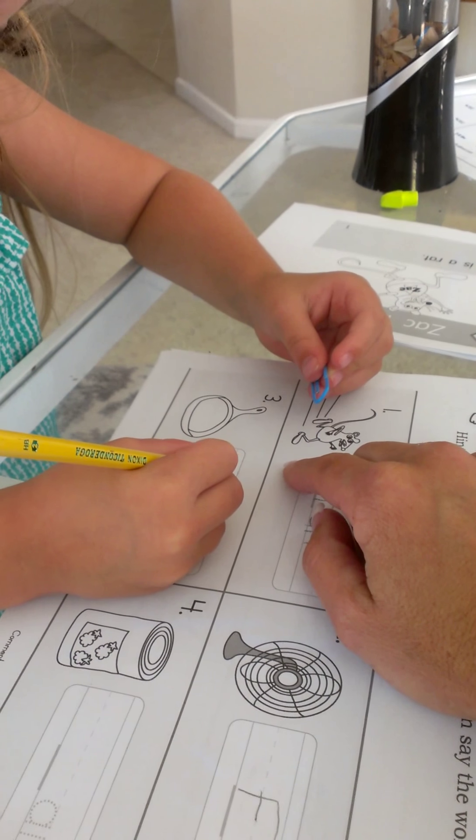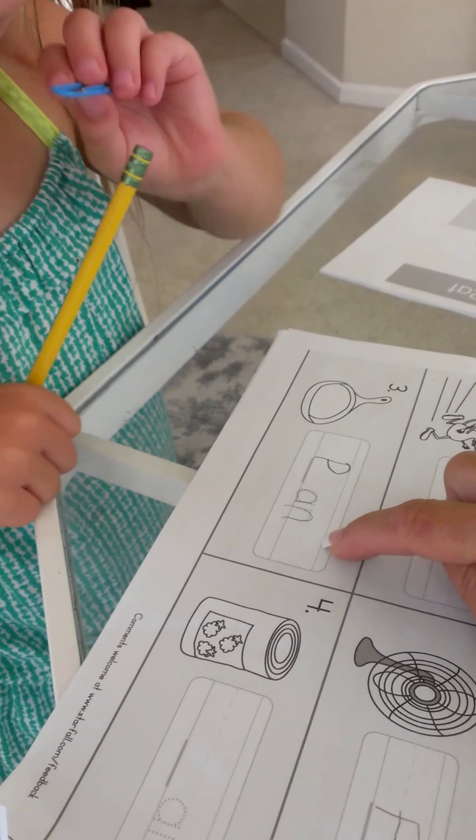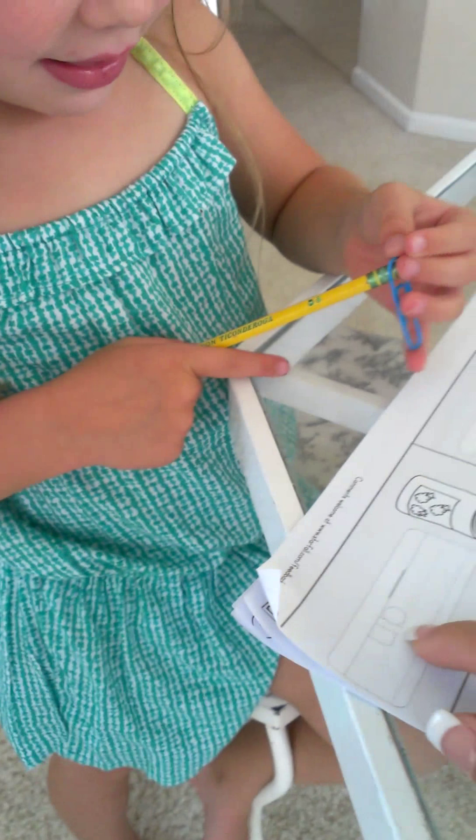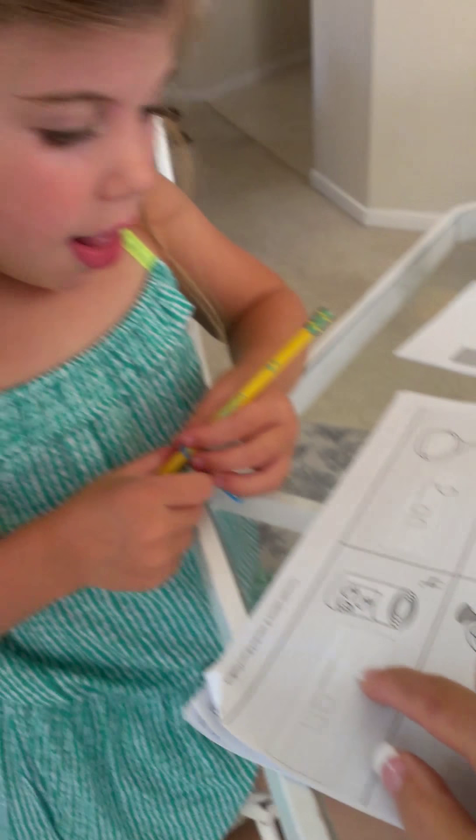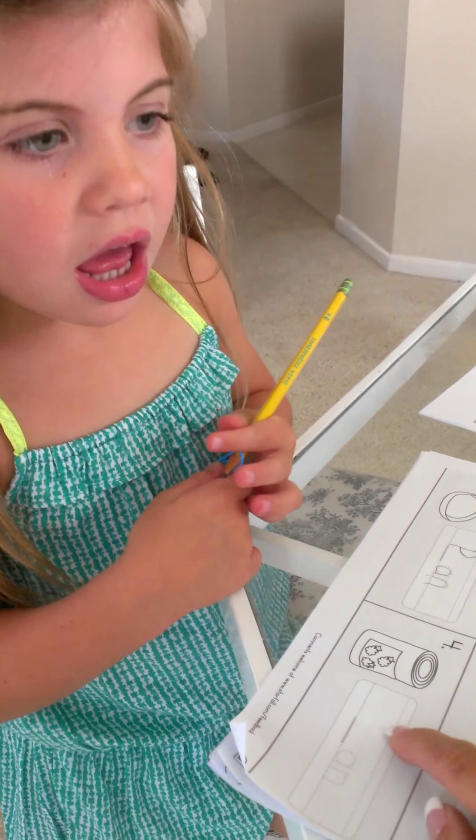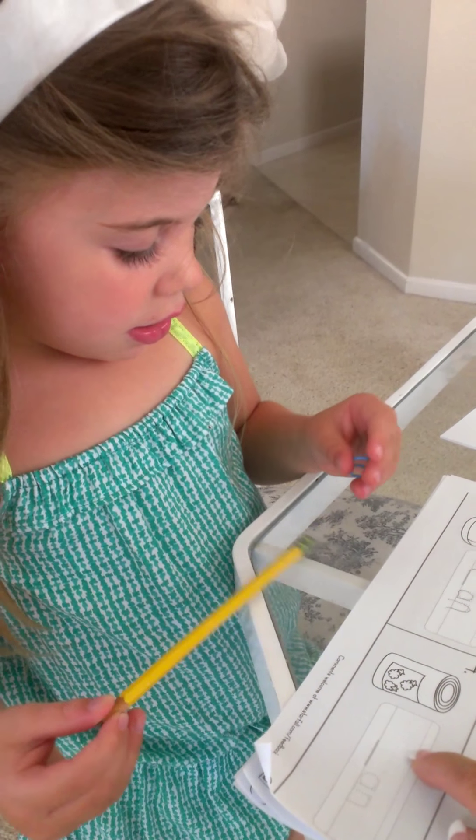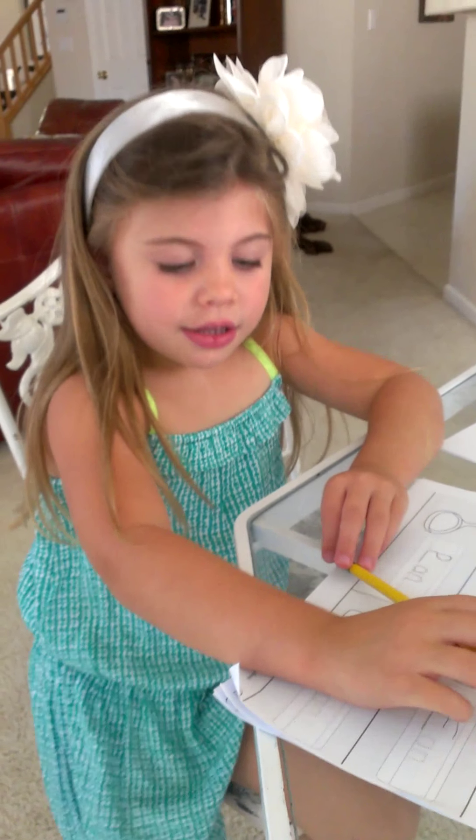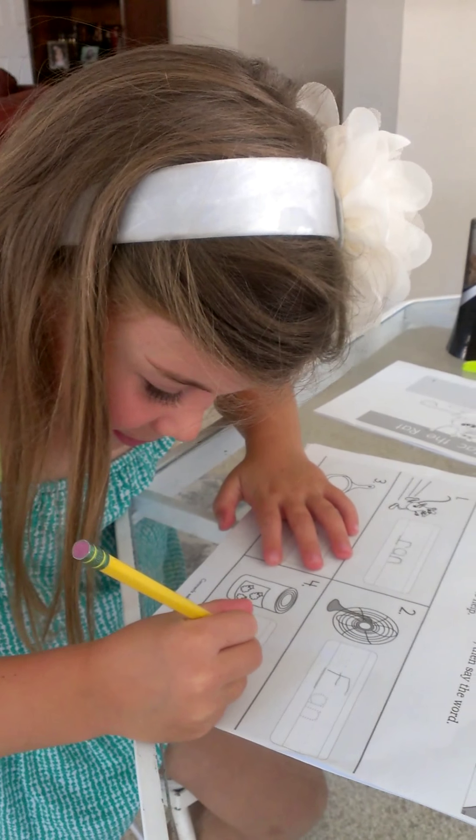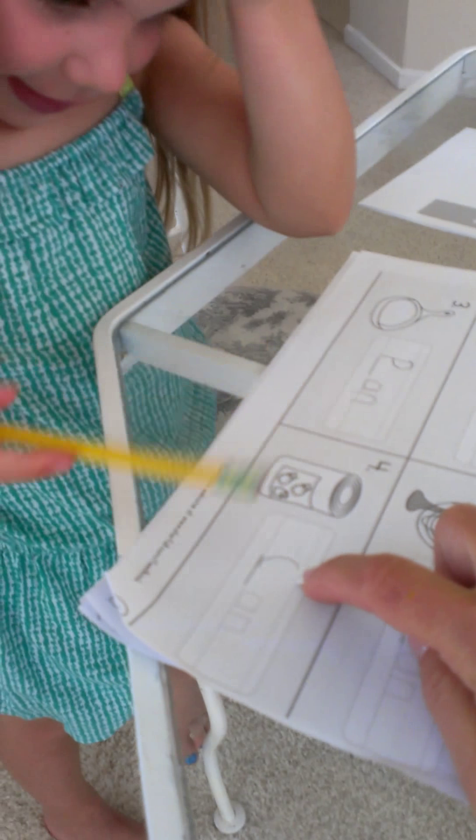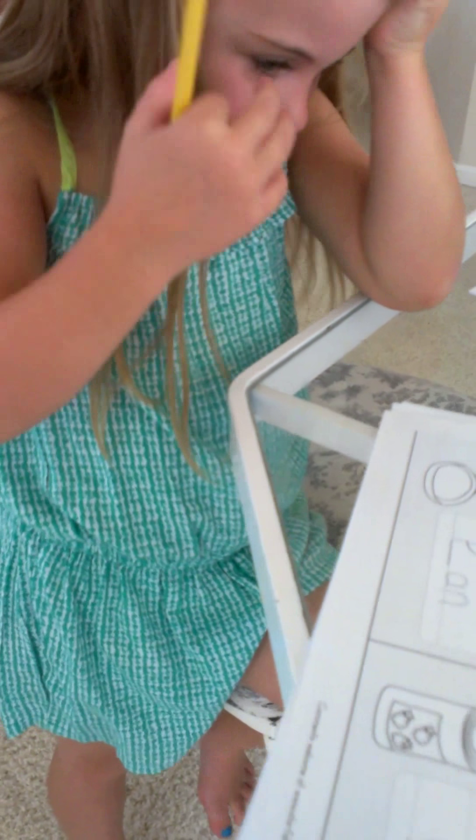It is a picture of can. And they already gave us the 'an,' so what's the beginning sound, Peyton? Can. What makes the beginning sound of 'k'? What letter makes the 'k' sound? And you wrote the letter C. Good girl. So let's read the word. Can. Good girl.